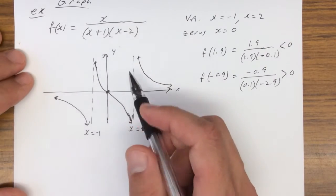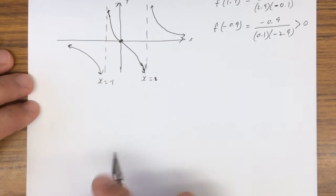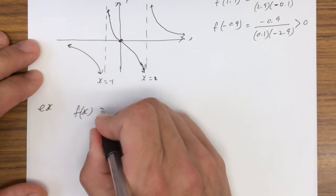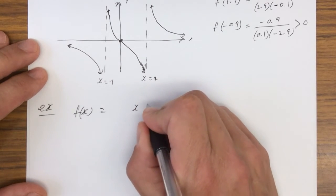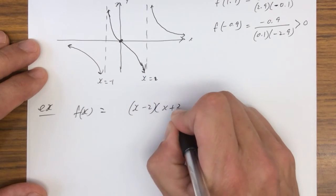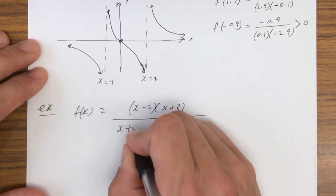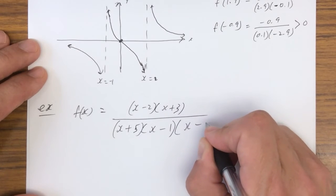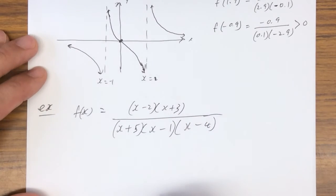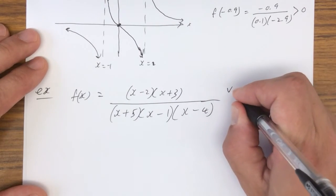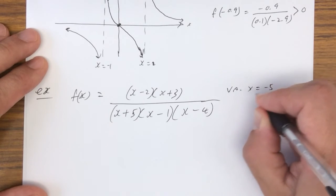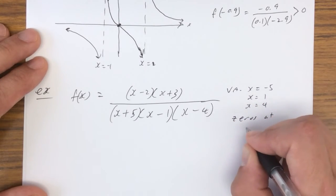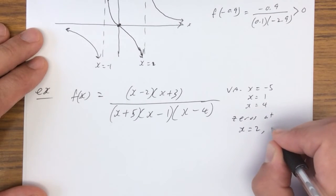That's how you graph a rational function where the degree of the top is less than the degree of the bottom. Let's try another example: f(x) equals (x minus 2)(x plus 3) all over (x plus 5)(x minus 1)(x minus 4). We're going to have vertical asymptotes at x equals negative 5, x equals 1, and x equals 4. We're going to have zeros at x equals 2 and x equals negative 3.